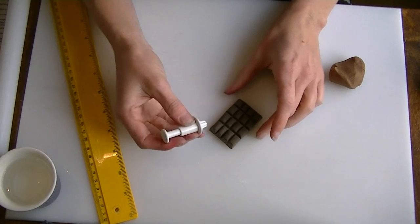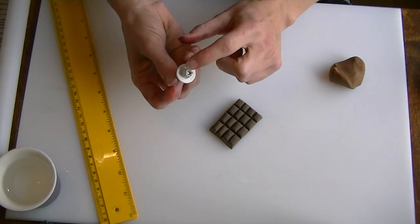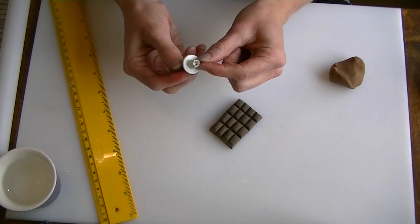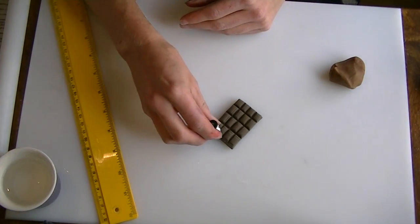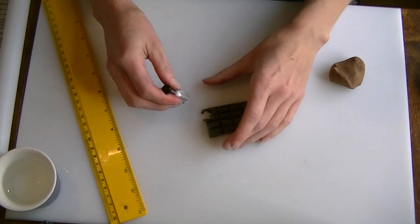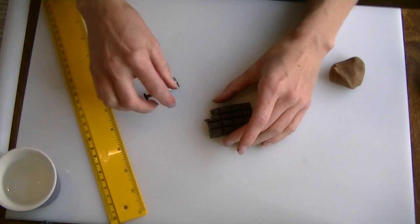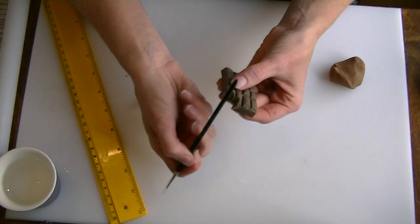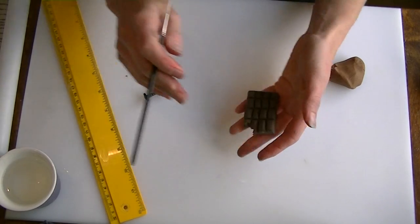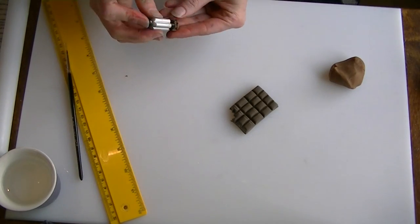If you want it to look like you have got teeth marks out find a cutter where it is serrated. So I have got a flower one, I have got the next size up and I am just going to push that into my bar a couple of places and I am just going to use the handle of my paintbrush to just push that in there so it looks like you have got a bit of a bite missing from your chocolate.